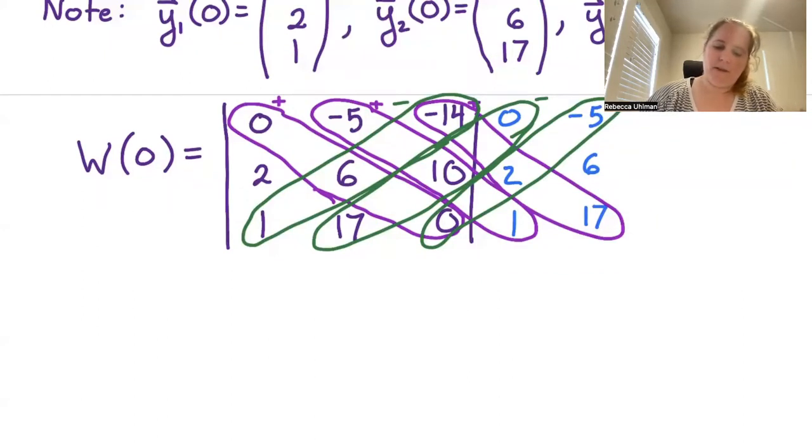Looking at the forward diagonals, that first forward diagonal would be just plus 0. Then we have negative 5 times 10 times 1, so we're going to add on a negative 50. Then we have negative 14 times 2 times 17, which if we do that math we wind up with negative 476.